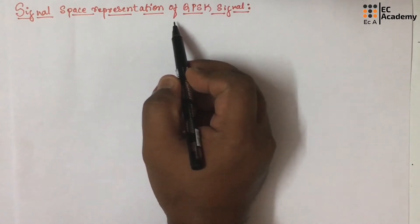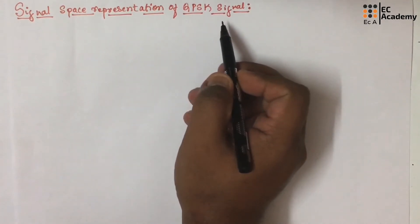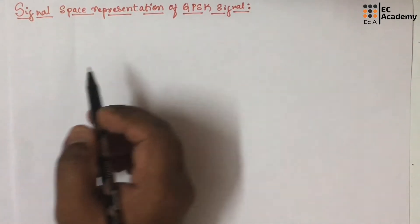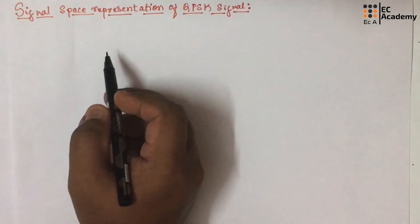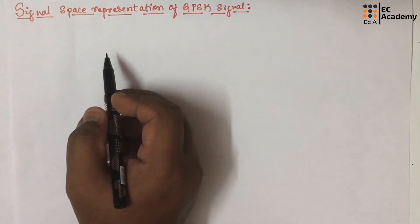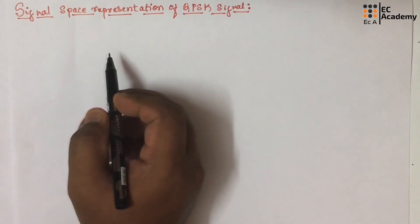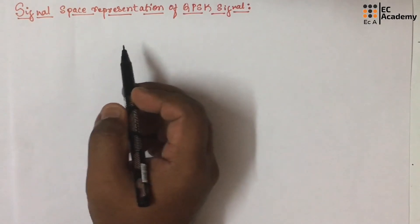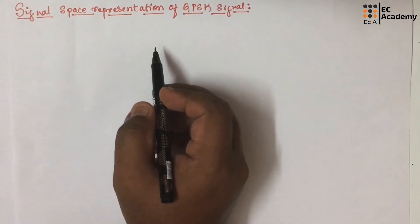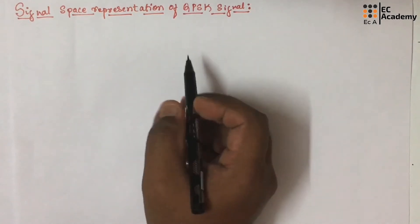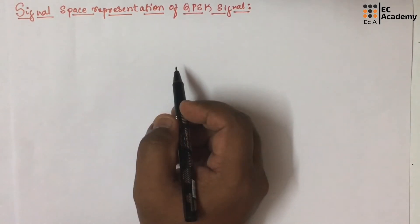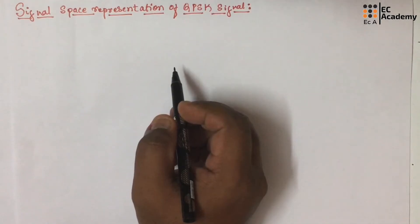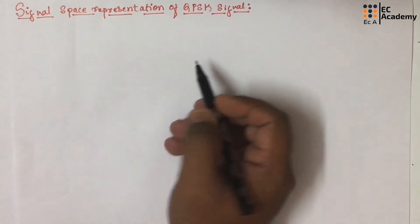Now let us analyze the QPSK signal. In a QPSK signal, depending upon the combination of two successive bits, the phase shift occurs in the carrier signal. This we understood in our previous lecture when we studied the phasor diagram of QPSK signal.